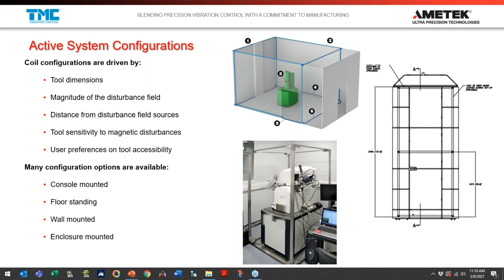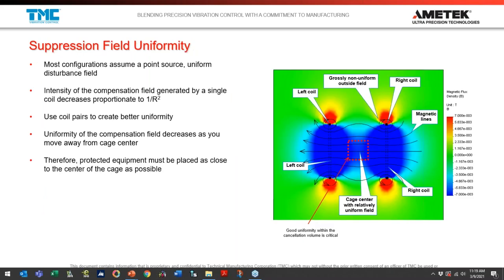When designing a cancellation system configuration, it's not a one-size-fits-all situation. You've got to look at the magnitude of fields that need to be canceled, the volume that needs to be canceled, and design a system of coils that can provide a uniform cancellation field — what we call uniform suppression field uniformity within the cancellation volume.